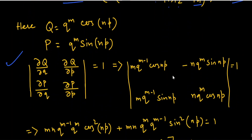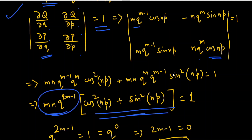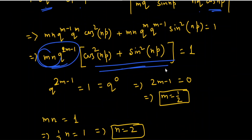The Jacobian reduces to: (∂Q/∂q)(∂P/∂p) − (∂Q/∂p)(∂P/∂q) = 1. Computing: ∂Q/∂q = m·q^(m−1)·cos(np), ∂Q/∂p = −n·q^m·sin(np), ∂P/∂q = m·q^(mn−1)·sin(np), ∂P/∂p = n·Q^m·cos(np). This simplifies to mn·q^(2m−1)·(cos²(np) + sin²(np)) = mn·q^(2m−1) = 1.